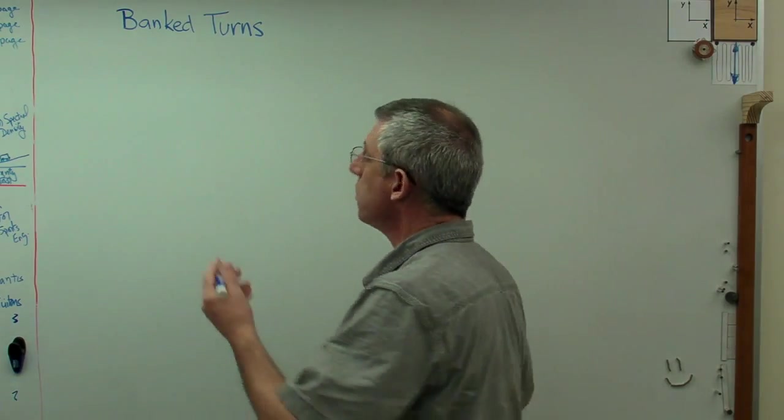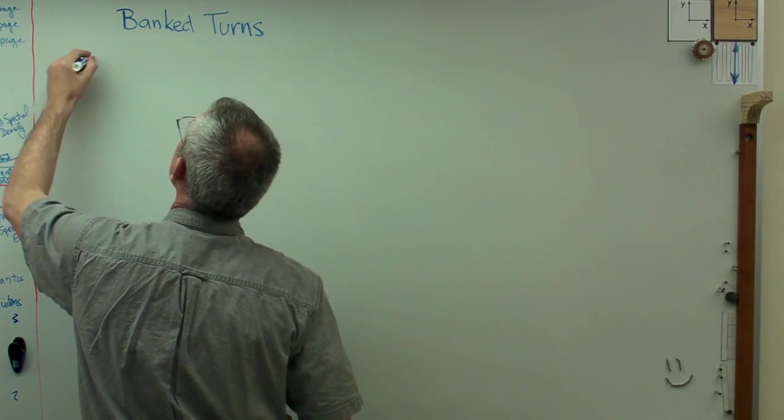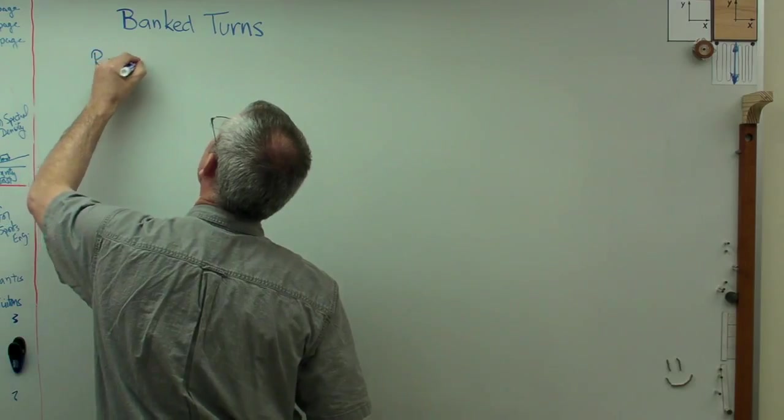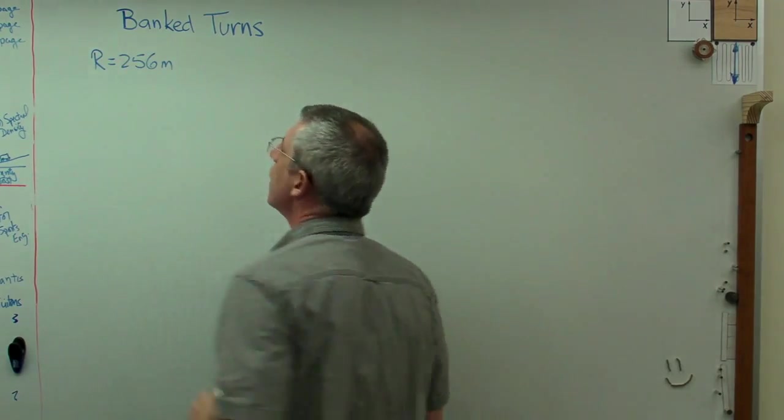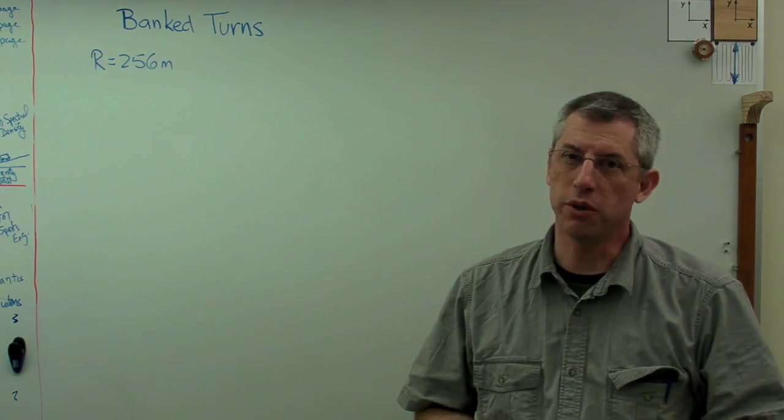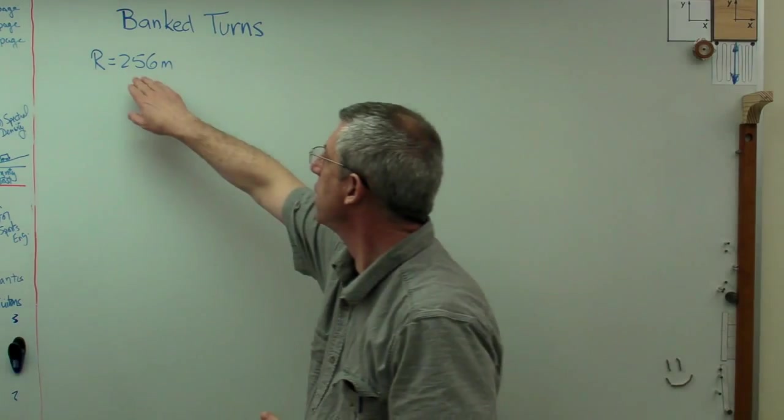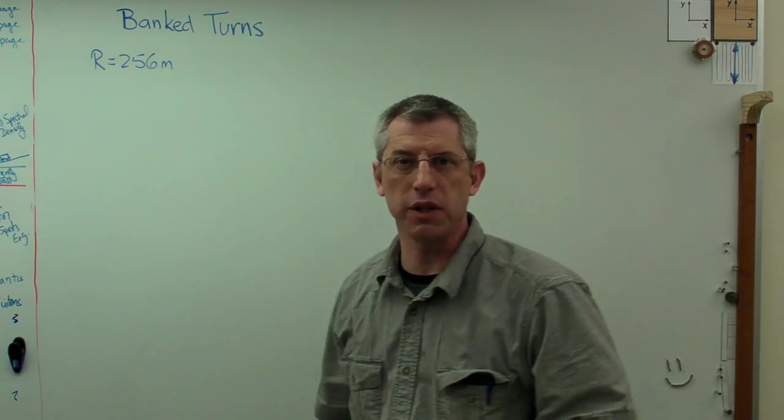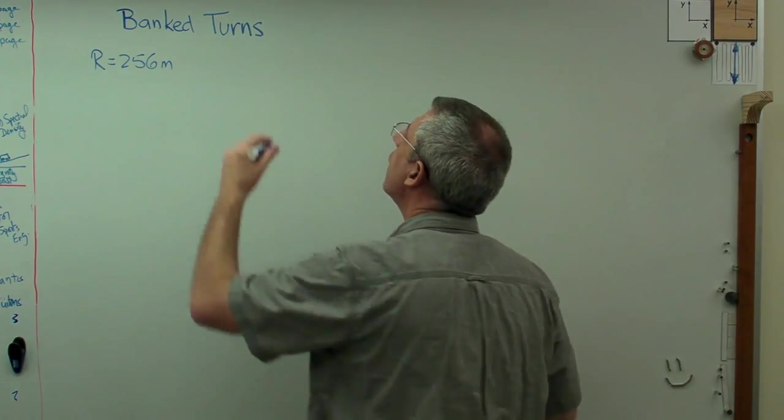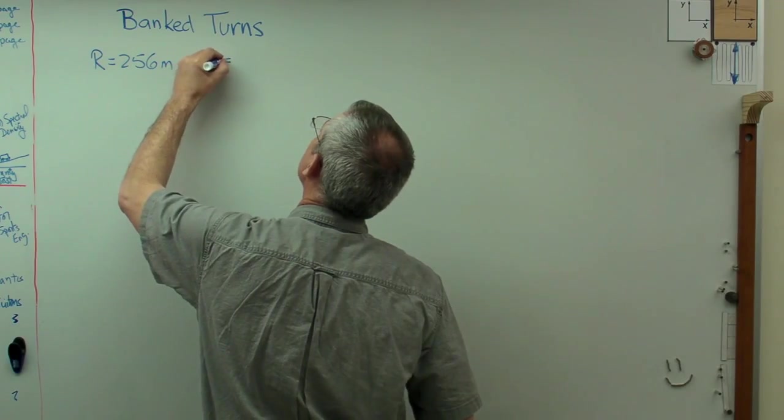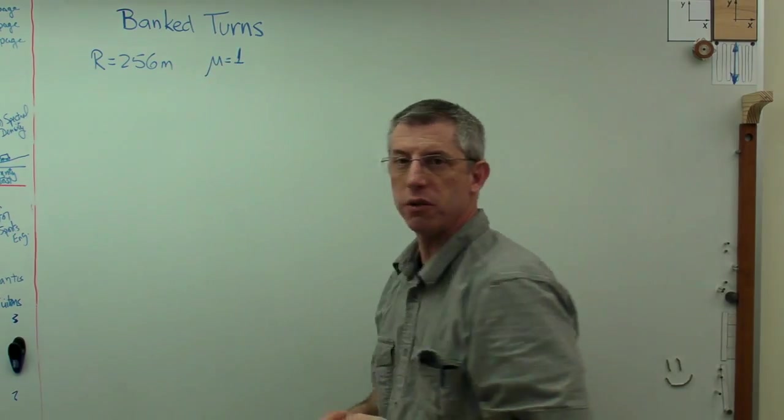For an example I'm going to use a racetrack at Indianapolis, which is just a little south of where I am now. From the dimensions, which are all given in English units, the radius of the turns is around 256 meters. Let's say we've got a car with pretty good tires with a coefficient of friction of one.